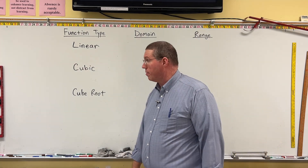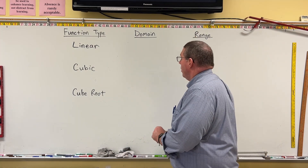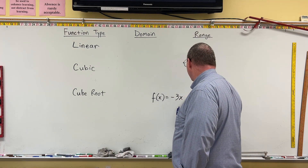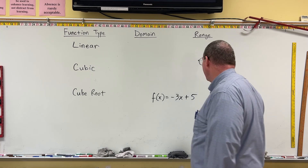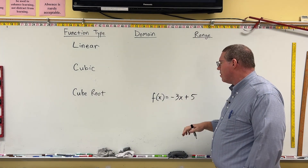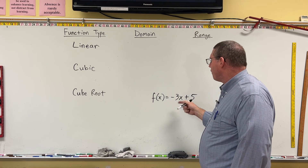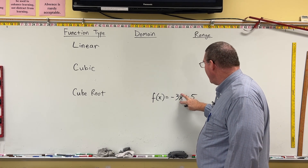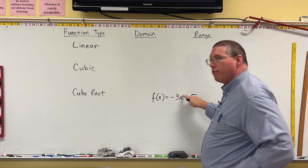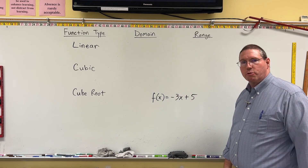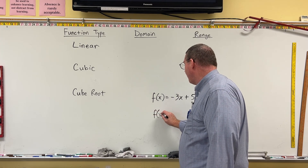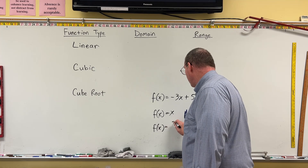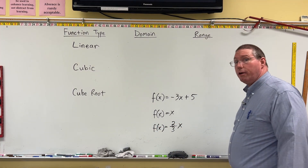I'm going to do examples of each one. A linear function looks like this: f of x is equal to negative 3x plus 5. It's basically mx plus b form. It can also be like negative 3 over 2 times x plus 5. The x is to the first power, and then we might have something added or subtracted. Another example of a linear function is f of x equals x, or f of x equals 2 thirds x.